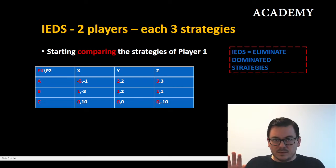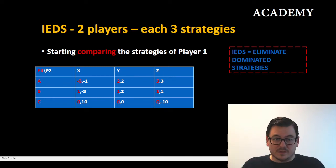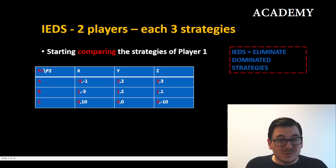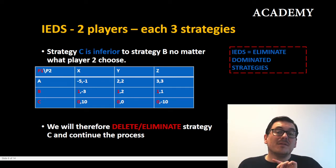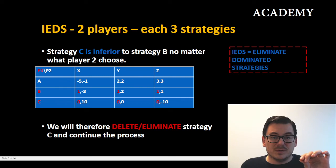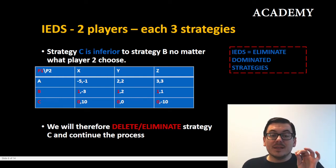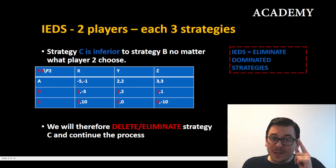So we must continue. Let's now compare strategy B versus strategy C. Strategy B gives player one a payoff of one no matter what player two chooses to play, and strategy C gives player one zero no matter what player two chooses. Therefore we can state that strategy C is inferior to strategy B no matter what player two plays, and so we will eliminate strategy C from the game.